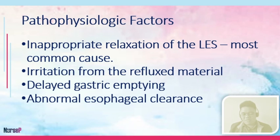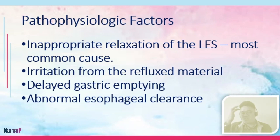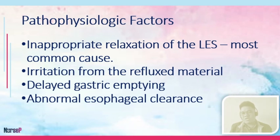Next, there is irritation from the reflux material, which could lead to metaplastic changes on the esophageal wall. Normally, the cells of the esophagus are squamous cells. However, due to constant exposure to acid, there is a tendency for the cells to change to columnar-lined epithelium. This columnar change can be a pre-malignant state, and this condition is referred to as Barrett's esophagus, which is a predisposing factor towards esophageal cancer.